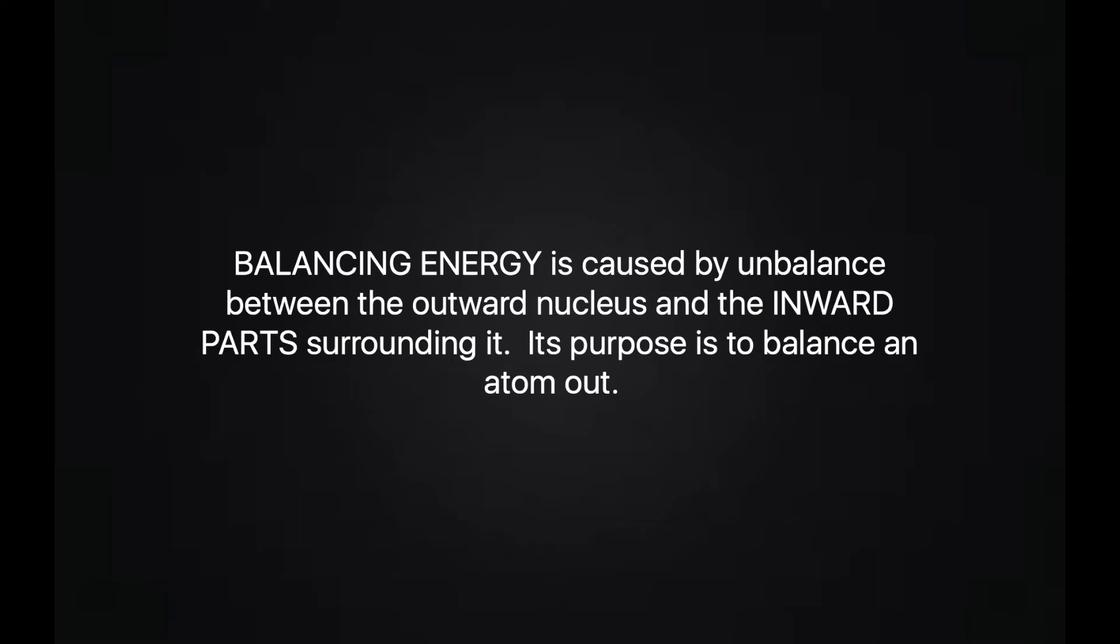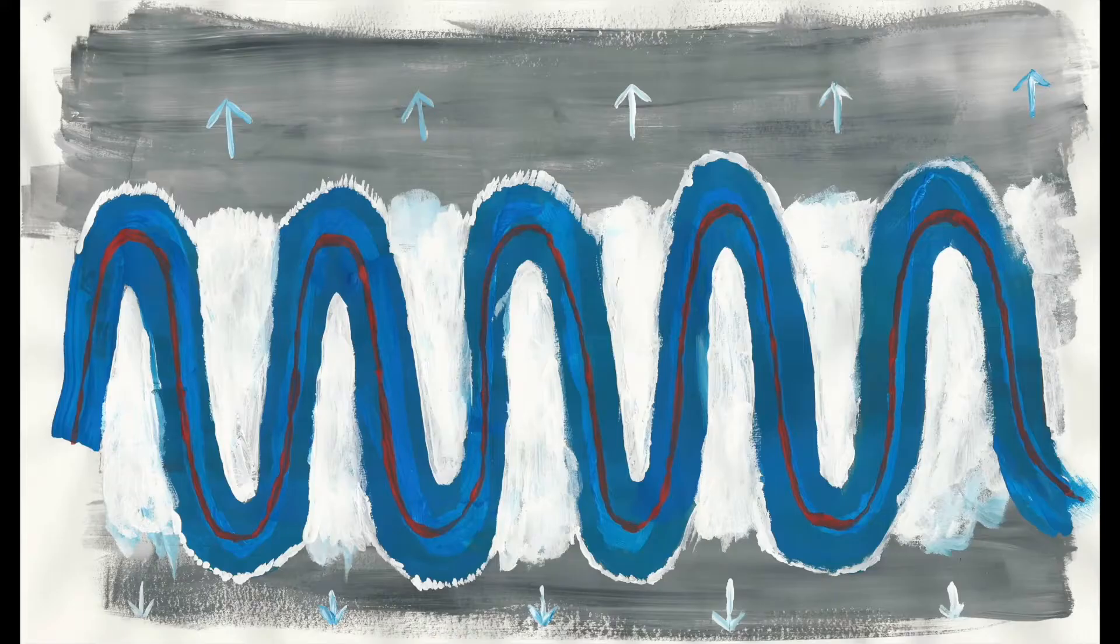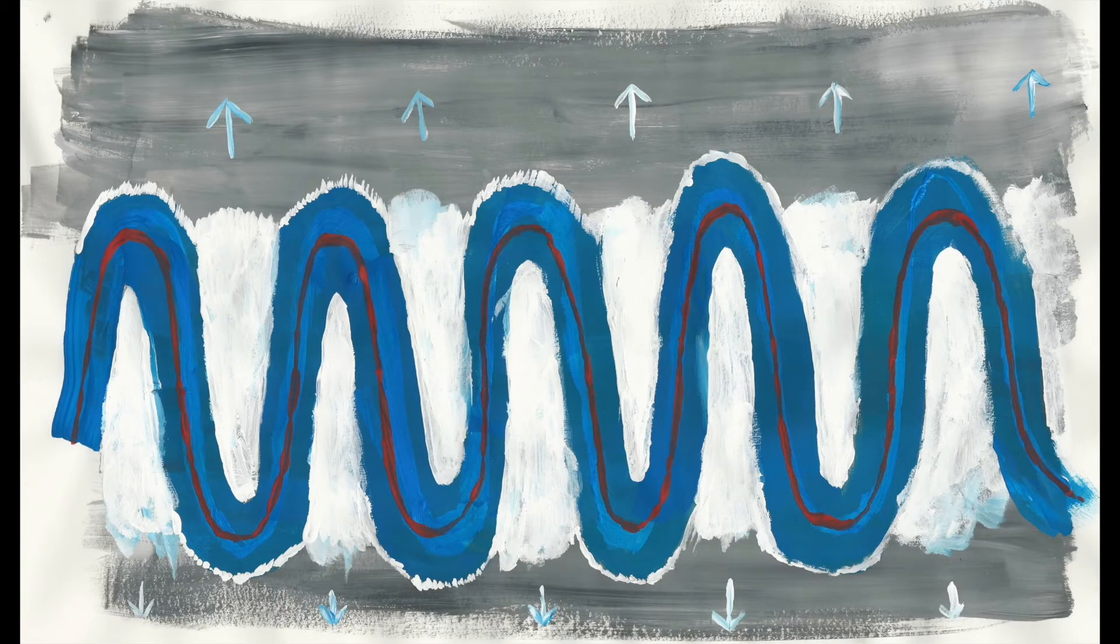If the nucleus of outward heat and light is stronger than the inward parts surrounding it, then this field can carry out excess heat and light out of the nucleus, and this is what electricity is. The waves carry this energy out, so they become like particles. This will occur until the atom has balanced out.